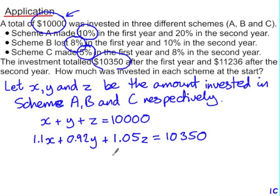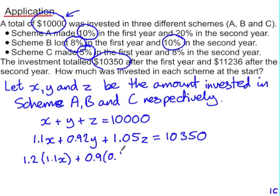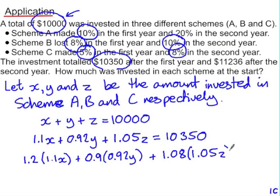In the second year, scheme A made 20%, so that 1.1x has been increased by 20%, meaning we multiply by 1.2: so 1.2 of the 1.1x. Scheme B lost 10% this time, so it's now 0.9 of the 0.92y. And scheme C made 8%, so we now have 1.08 of that 1.05z. At the end of the second year, we now have $11,236.